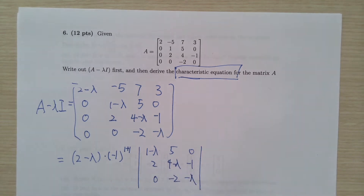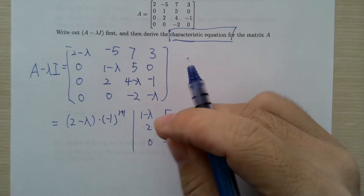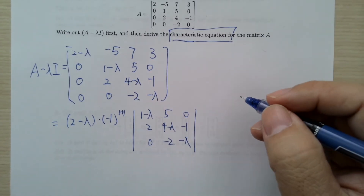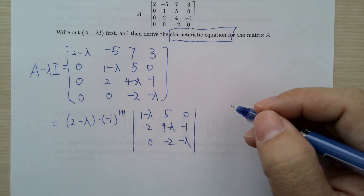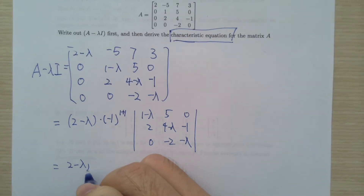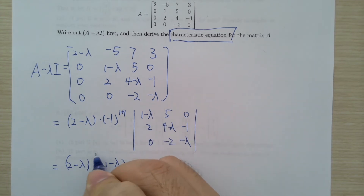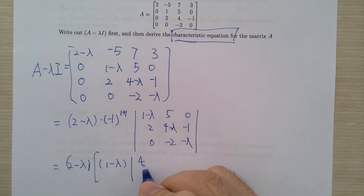That 3x3 minor is: (1 - λ), 5, 0 in the first row; 2, (4 - λ), -1 in the second; and 0, -2, -λ in the third row. So we get (2 - λ) times (1 - λ) times the determinant of the 2x2 block.